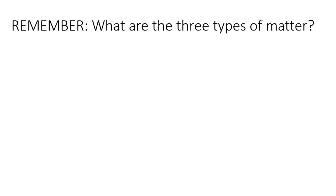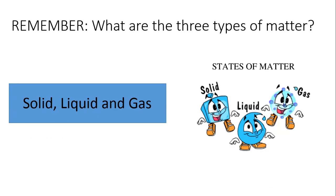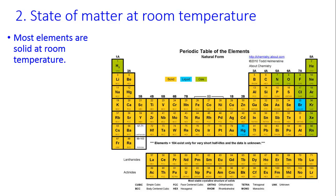To remind some of you, the three types of matter are solid, liquid, and gas. And the second property of matter that we want to know is the state of matter at room temperature.